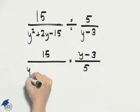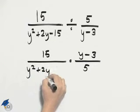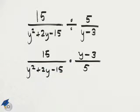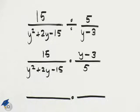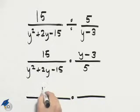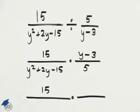The first fraction stays as it is written. Now we can factor to see if we can divide out any common factors. The numerator is simply 15, which could be factored, but we'll leave it as 15.